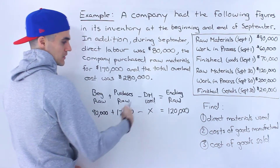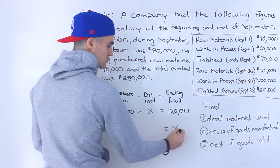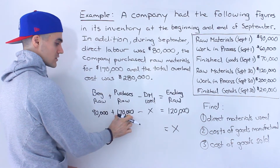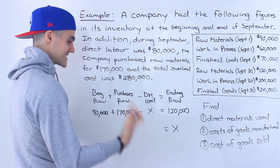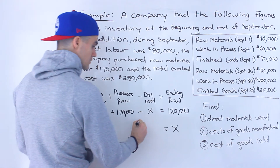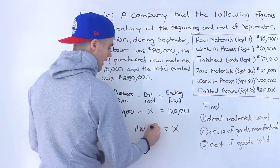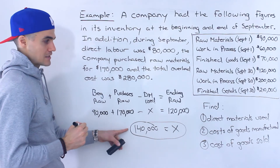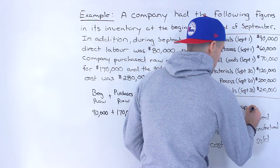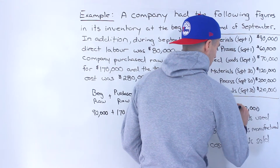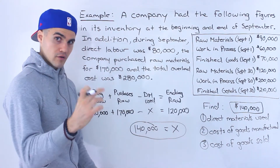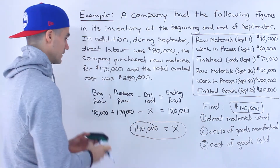To solve for X, we bring the negative X over to become a positive X, and bring the $120,000 over to become negative $120,000. So we have $90,000 plus $170,000, which gives us $260,000, and then subtracting $120,000 from $260,000 gives us $140,000. That's the answer for number one — the direct materials used in production was $140,000. This figure then flows to the second line in the flow chart.